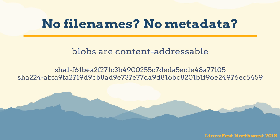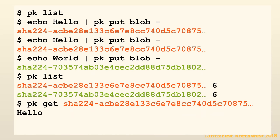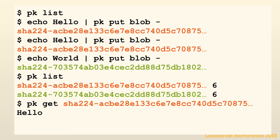Everything is built up of blob refs and blobs. Content-addressability has many advantages: it's super simple, you get content deduplication for free, it's super cacheable because there are no versions and you can set cache headers to infinity, and you get integrity checking for free against disk corruption. As an example: you can echo 'hello' into pkput blob and get back a blob ref. Running the same command again gives you the exact same blob ref — that's content deduplication. Echo 'world' and you get a different blob ref.